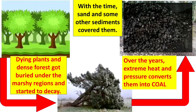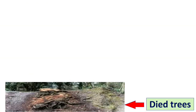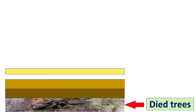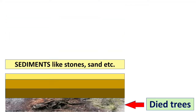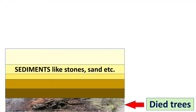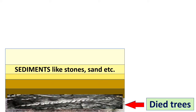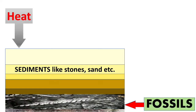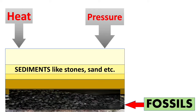Over millions of years, they were covered by sediments and new plants. Due to extreme heat and pressure, this matter got converted into coal. As seen in the picture, dead trees get covered with layers of sediments like stone and sand. After many years, these decayed trees and plants convert into fossils, and when they are subjected to extreme heat and pressure, they convert into coal.